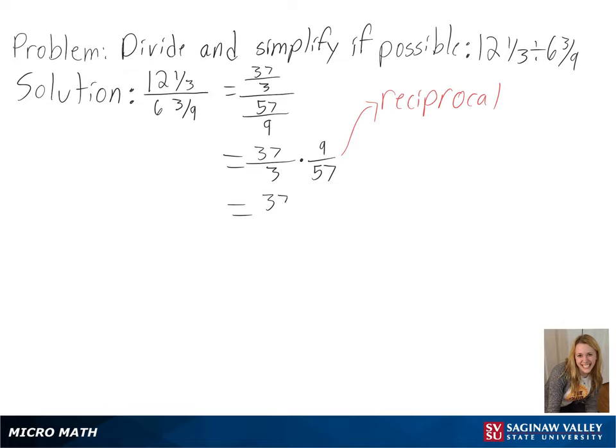Next we can put this into simpler terms by writing 9 as 3 times 3 and 57 as 3 times 19. So we can then simplify 3 over 3 since it is equal to 1 and any number multiplied by 1 is itself.